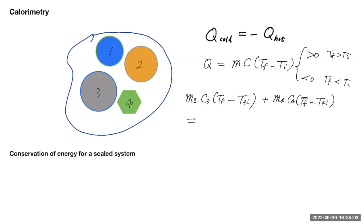That equals the heat given up by objects one and two. The heat received by object one would be M_1 times C_1 times (T_final minus T_1_initial), but since heat is lost, T_final is less than T_1_initial, making this negative — so I attach a negative sign to bring it back positive. Similarly, the heat lost by object two is minus M_2 times C_2 times (T_final minus T_2_initial). If I move both negative terms to the left-hand side, the negative signs disappear and every term has T_final minus T_initial.